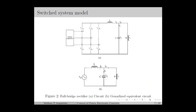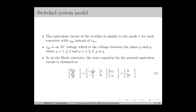Based on that, we can have an equivalent circuit of the rectifier as in figure 2B, in which VPQ denotes the phase-to-phase voltage between phase P and Q. For example, if S1 and S5 are on and all the remaining switches are off, then this LC circuit will be connected across phase 1 and 2, so VPQ equals V12. For this generalized circuit, we can derive the state equation similar to the buck converter. The equivalent circuit of the rectifier is similar to mode 1 for the buck converter with VPQ instead of Vin. Therefore, the state equation for the equivalent circuit is obtained as in equation number 1, which is similar to the buck converter with VPQ appearing instead of Vin.